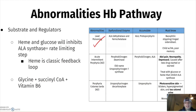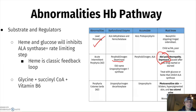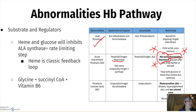AIP inhibits the deaminase — that was the old name uroporphyrinogen, but you just need to know it's the deaminase. Interestingly, you'll see AIP on your psychiatry shelf because patients always present with depression, abdominal pain, and some kind of neuropathy or nerve pain. You'll definitely see it there.